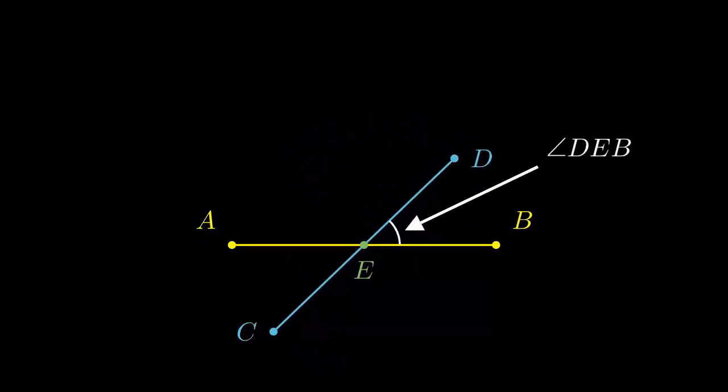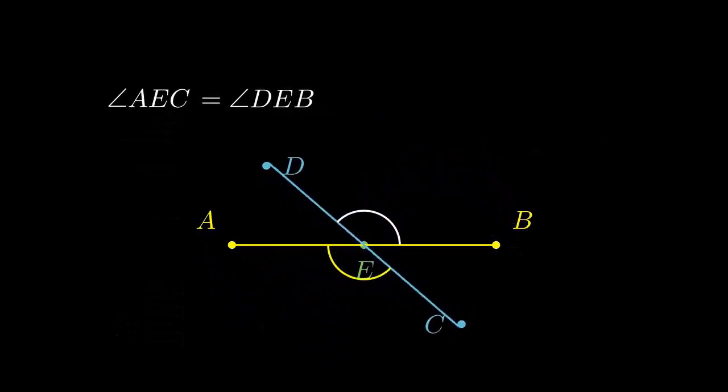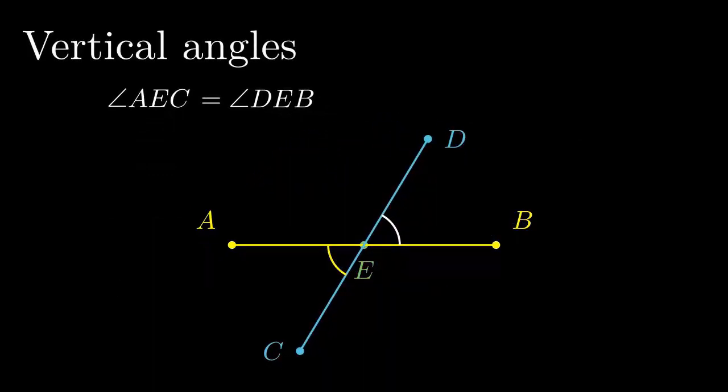Then, the measures of the angle DEB and AEC are always the same. Can you see the measures of them are the same? They are called vertical angles. The angle AED and CEB are also vertical angles, and the measures of them are the same.